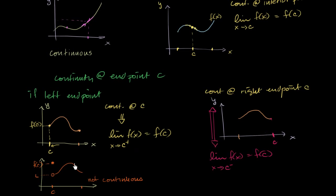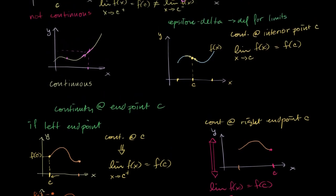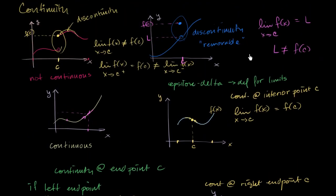And a situation where we're not — you could imagine instead of this being defined right at that point, the function jumps up just like we did before. So once again, continuity is not a really hard idea to fathom. Whenever you see the function just all of a sudden jumping, or there's a gap in it, it's a pretty good sense that the function is not connected there — it's not continuous. But what we did in this video is we used limits to define a more rigorous definition of continuity.